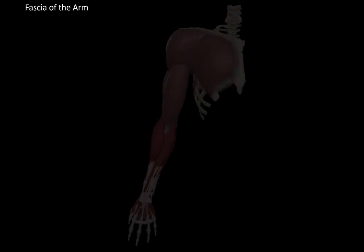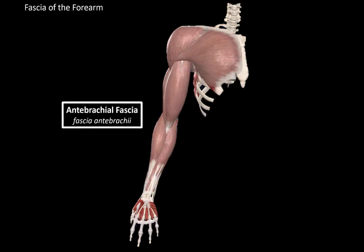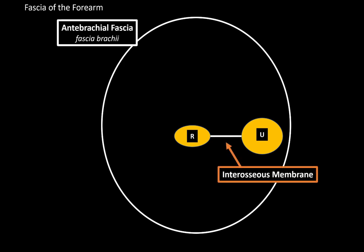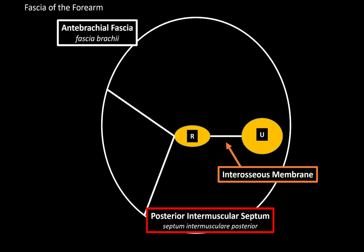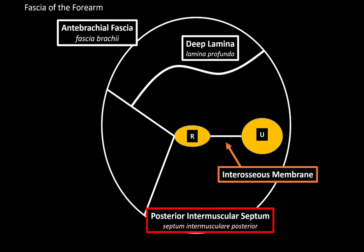That was mainly the fascia of the arm. Then we have the fascia of the forearm, called the antebrachial fascia. Making a transverse cut, we will see the antebrachial fascia around the ulna and radius. Between the ulna and the radius, there's the interosseous membrane. There are two deep fascias separating the forearm into compartments, called the posterior intermuscular septum and the anterior intermuscular septum. From the anterior intermuscular septum, there's another fascia called the deep lamina, separating the anterior compartment.